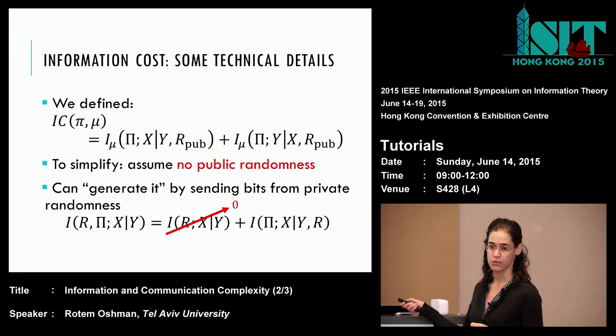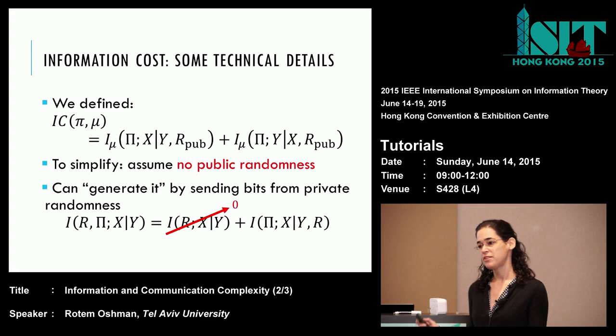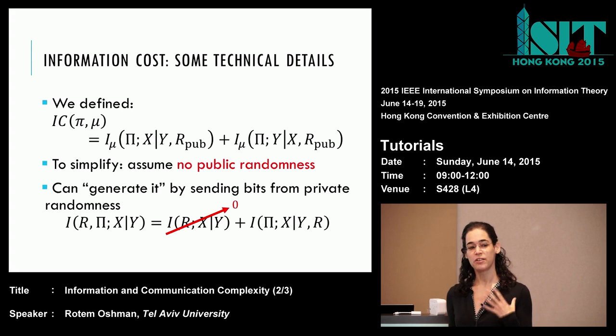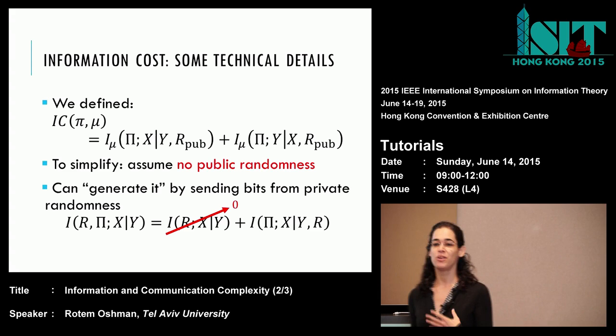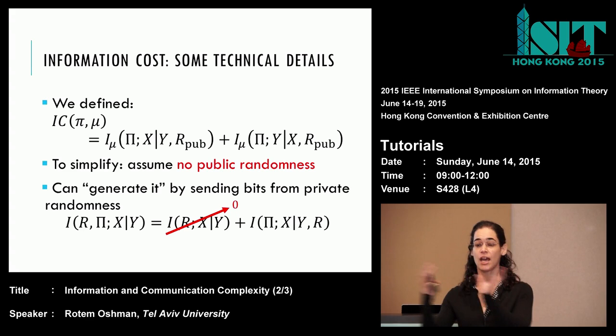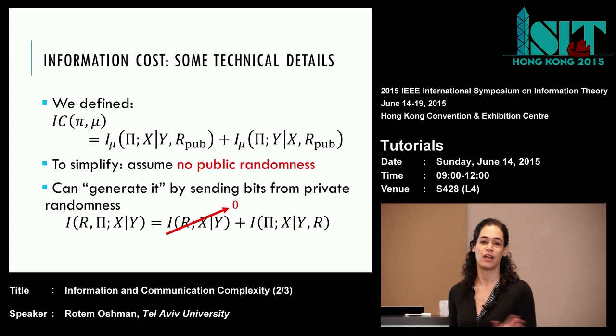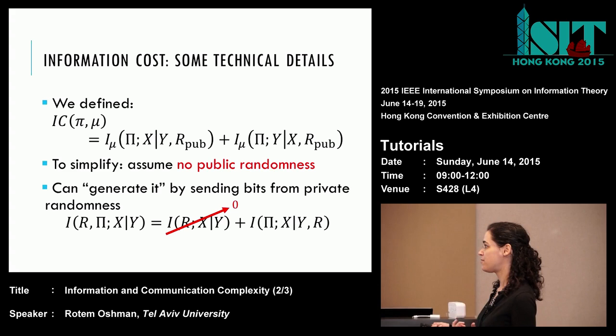The first thing I'd like to do, which Mark already mentioned, is get rid of the public randomness. I want to assume that my protocols do not have access to public randomness. If they wanted public randomness, they can always generate it by having Alice take a chunk of her private randomness and send it over to Bob. In terms of information complexity, this doesn't add any information cost, because this randomness has nothing to do with the input.